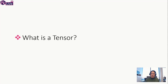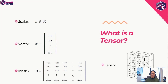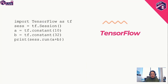What is a tensor? A tensor comes from mathematics. In mathematics, a scalar is just a single real number, a vector is a collection of numbers, and a matrix is a two-dimensional collection of numbers. A tensor is a container where you can store scalars, vectors, or matrices. Importantly, TensorFlow only works with tensors, so we need to transform our data into tensor format. In Python with Jupyter Notebook, you import TensorFlow, start a session, define constants like A=10 and B=32, and run operations like A plus B.